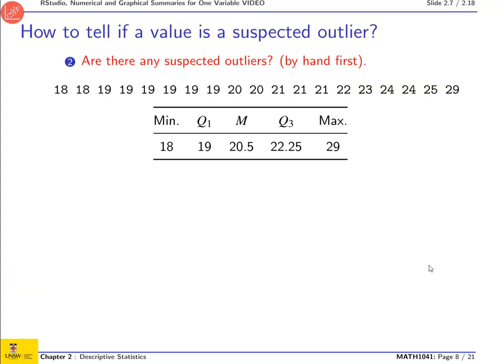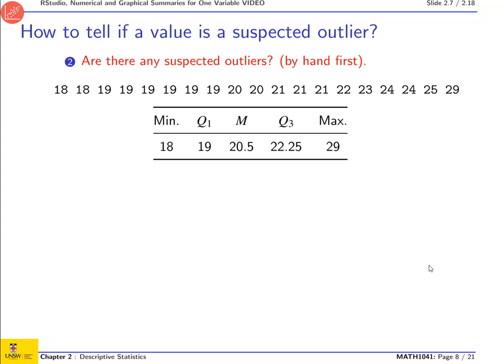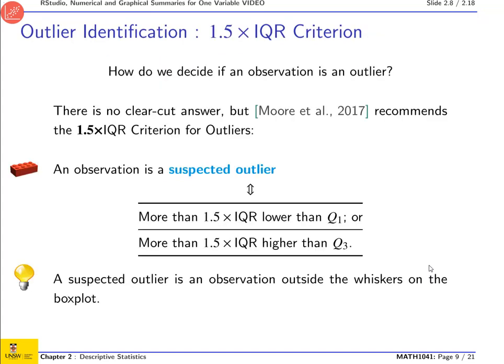Let's move on to question two. We need to find if there are any suspected outliers. It's related to the five-number summary, but how exactly do we do that? There's no clear-cut answer, but we're going to follow the textbook and use what is called the 1.5 times interquartile range criteria to find if something is an outlier. What it really says is if a value is too far away from the other values, there's something strange about it.